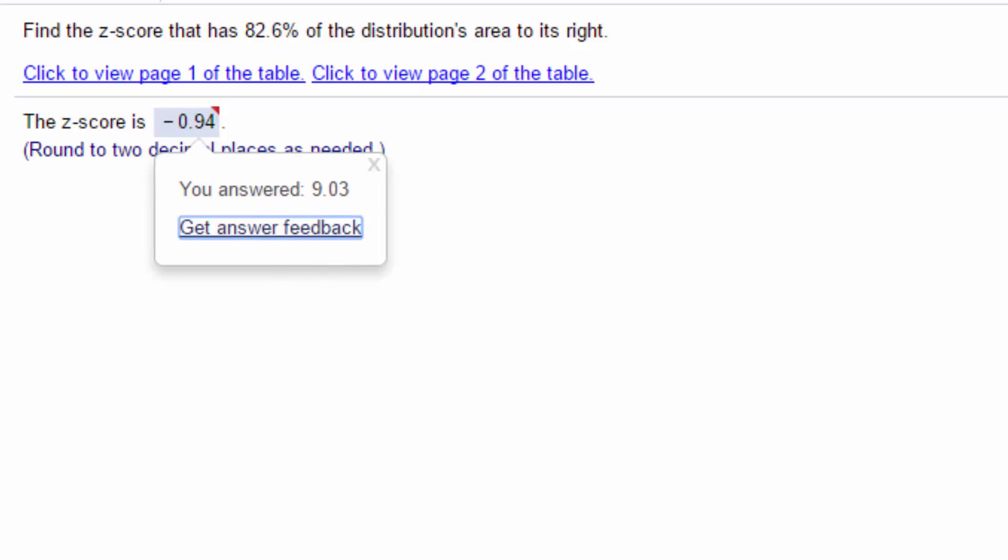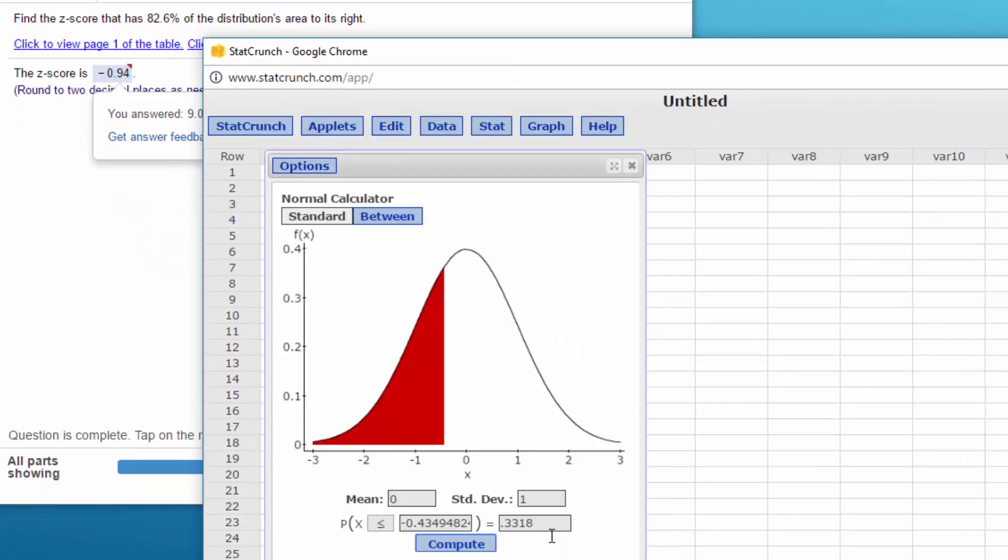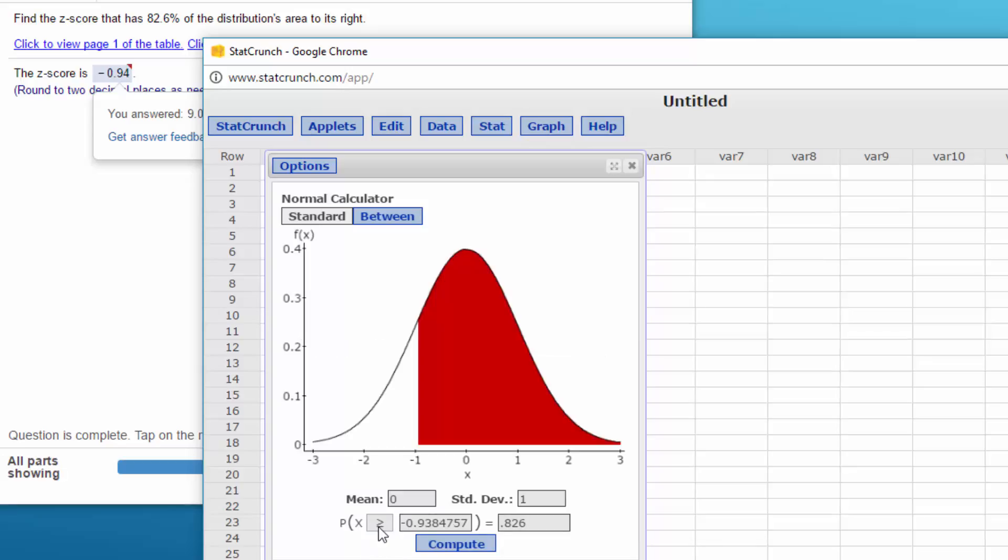Again, let's bring up StatCrunch. This time it's 0.826, and we want to the right, so we get our greater than symbol pointing that way, and that gives us a z-score of -0.94.